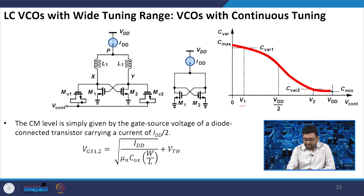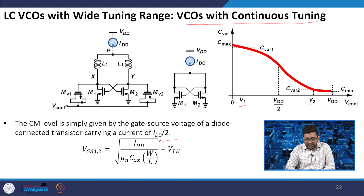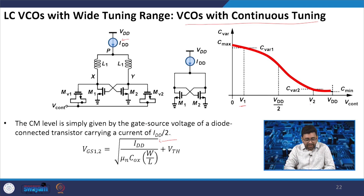For the LC VCO with a wide continuous tuning range, at voltage V1 we get C_var1, at V2 we get C_var2, and at VDD/2 there is a reference voltage. The common mode level is given by the gate-source voltage of a diode-connected transistor carrying a current of IDD/2, so VGS1 and VGS2 are given by the corresponding equation. We can also place the current source at the top and ensure equal current distribution on both branches.